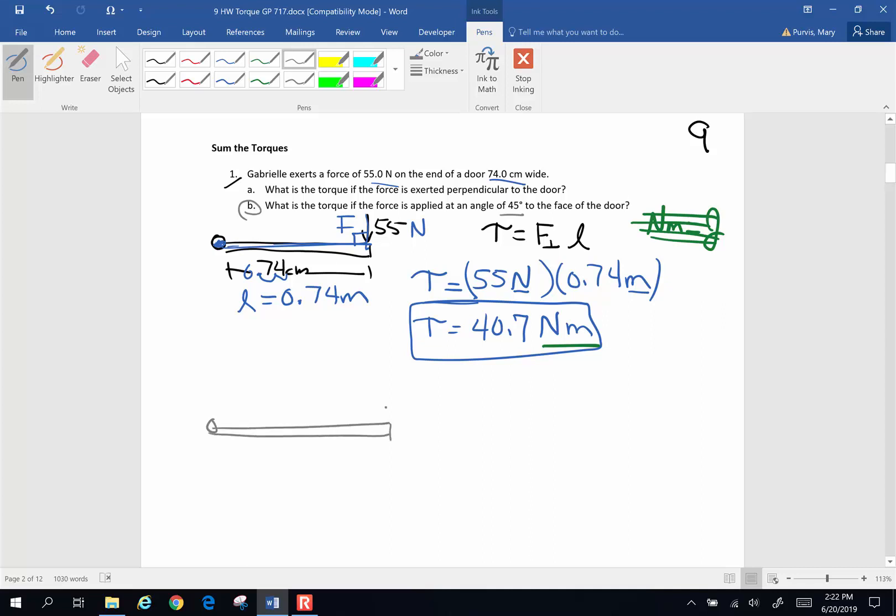And the force, instead of being applied directly at a perpendicular angle, it is going to be applied at a 45 degree angle. I suppose I should have the force vector placed in the right direction. The lever arm is still 0.74 meters.